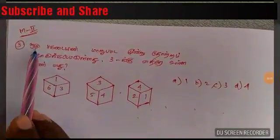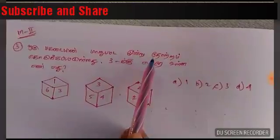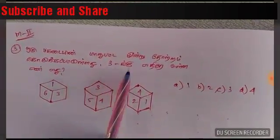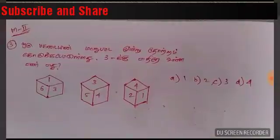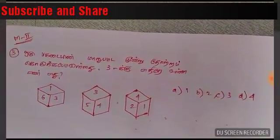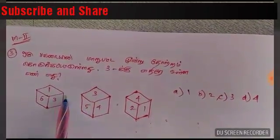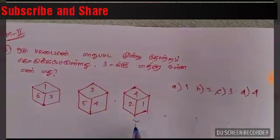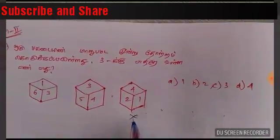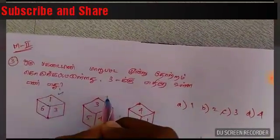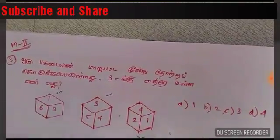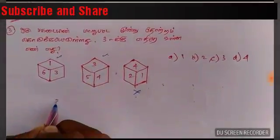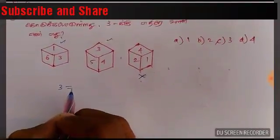We are looking at model 2, we are looking at model 1. If you are looking at model 3, you can choose the 3. So the drawing is 3 for each row. Let's see how the same 3 comes to our 4.